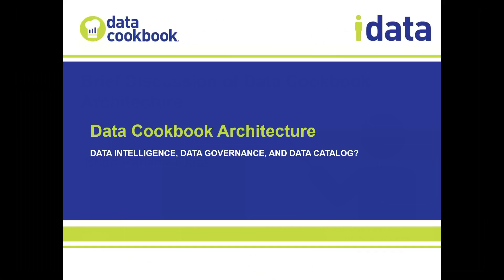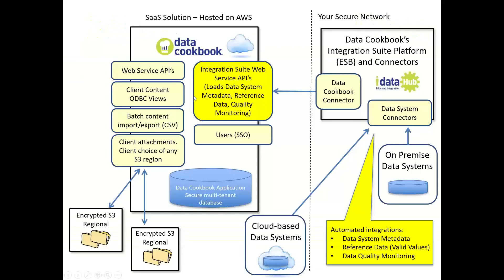The architecture of the Cookbook is a software as a service — it's a hosted environment. We support unlimited users, and we also have single sign-on. So if you want auto provisioning of your users, there are rules and permissions based on roles — what people can do, act upon, and see. There are all sorts of APIs for pulling and pushing information.